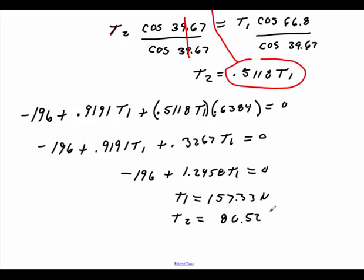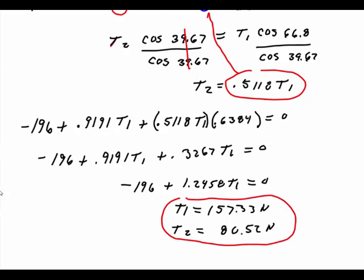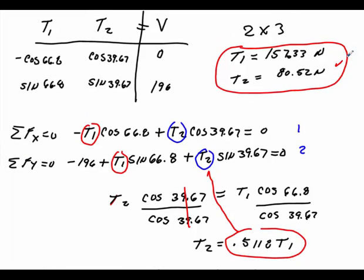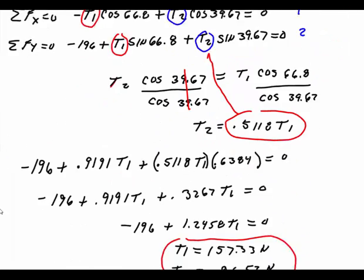Let me just run that in my calculator, verify that real quick. So 157.33 times 0.5118, and that is correct. That's what I got by doing it by hand, by doing substitution. We go back to the matrices and verify that what we have is correct, and it is correct, so both methods work effectively.